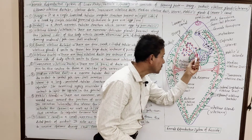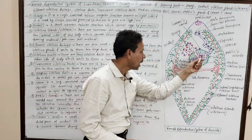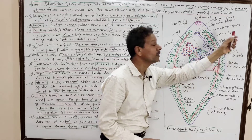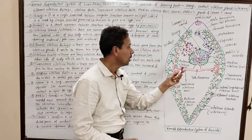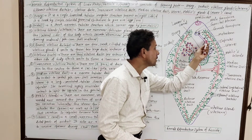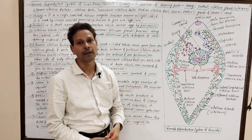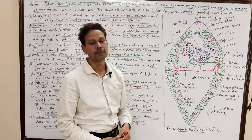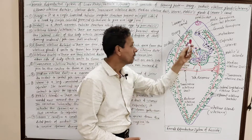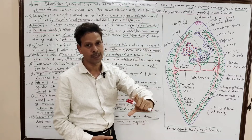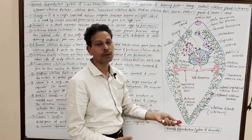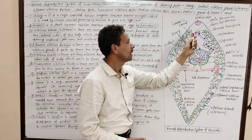From the junction of the oviduct and the median vitelline duct, a large coiled convoluted tubular structure develops — the uterus. The uterus accommodates a large number of mature capsules. The terminal part of the uterus — the metratrem — is highly contractile, having powerful muscles. It undergoes constriction, and as a result, the mature capsules are ejected into the common chamber, that is, the genital atrium.